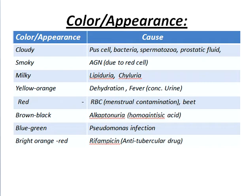Now about the colour and appearance of urine. Cloudy colour is caused by pus cells, bacteria, spermatozoa, and prostatic fluid.